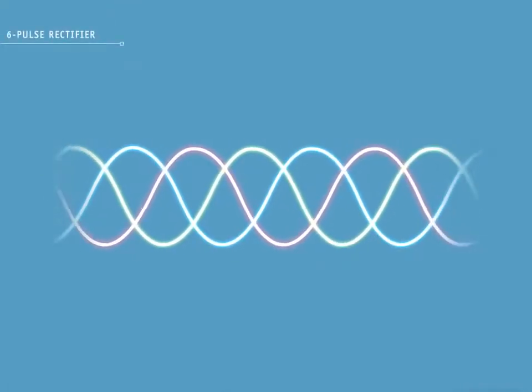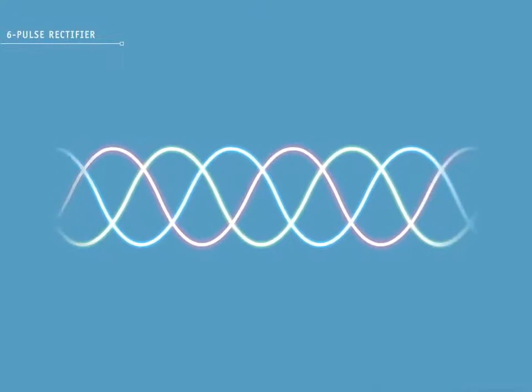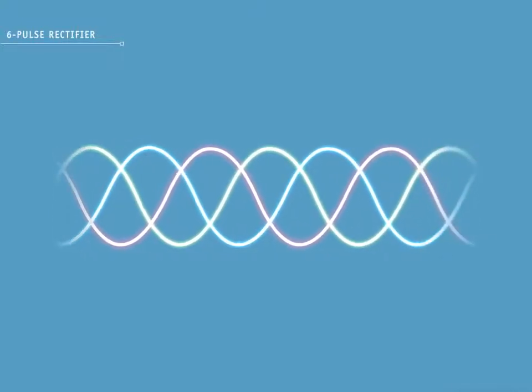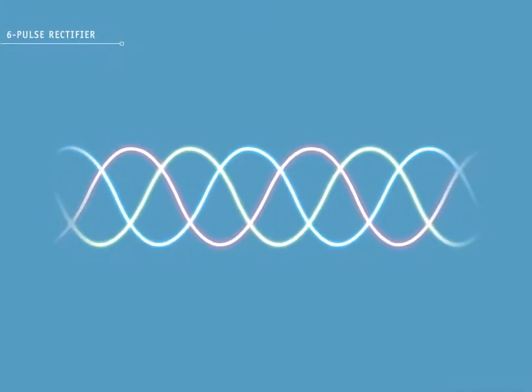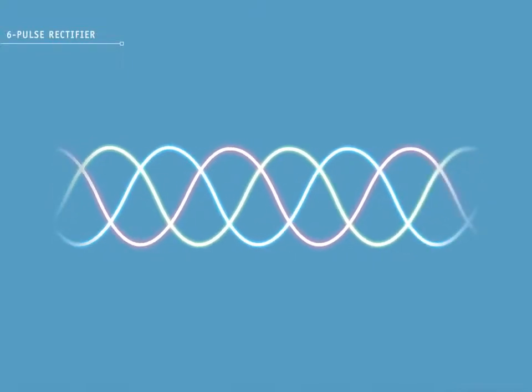This section shows how we convert three-phase AC into DC by running it through a six-pulse rectifier. This is simply three sets of full-wave rectifiers joined in parallel.